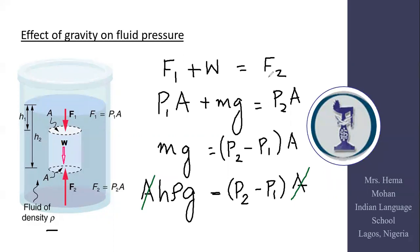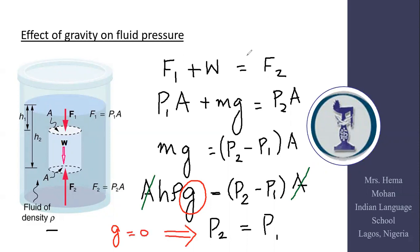In the absence of gravity, if g equals zero, then P2 equals P1. This is Pascal's law — in the absence of gravity, the pressure at all points inside the liquid, whether the topmost point, bottom-most point, or any point at any depth, is the same. We have now mathematically shown that Pascal's law is true.